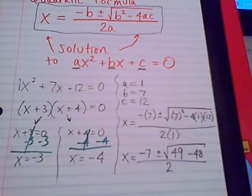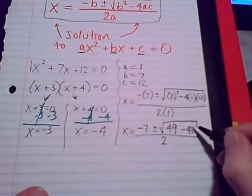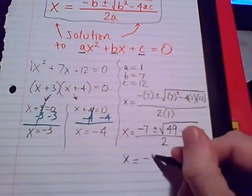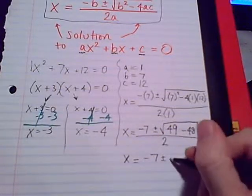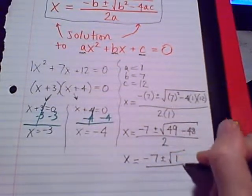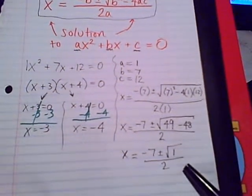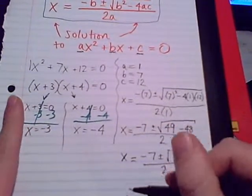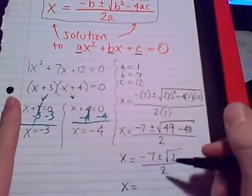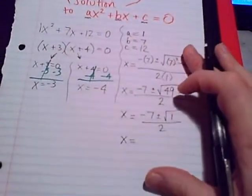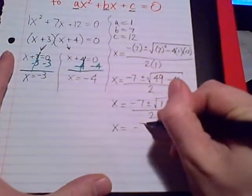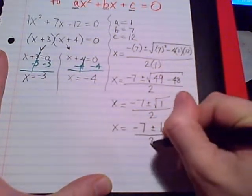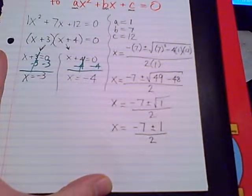I'm not trying to do too much at once, just taking my time. Inside the radical we have 49 minus 48. Negative 7 plus or minus square root of 1, over 2. Can we simplify this square root of 1? We definitely can. Square root of 1 is 1. So now we're looking at x equals negative 7 plus or minus 1, over 2. That's where the formula has taken us.